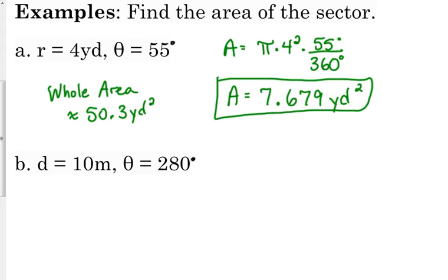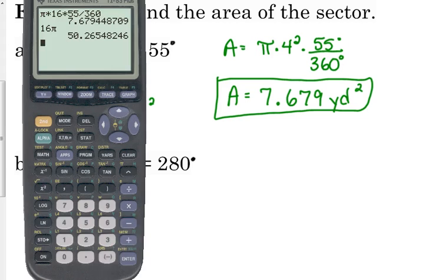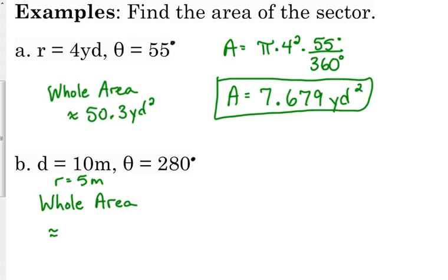In example B, we've got the diameter is 10 meters and theta is 280 degrees. What do we need to do to find the whole area? Is it 10 squared pi? And 100 pi? No. It would be half of that, because that's the diameter. So the radius is 5. So it would be 5 squared pi, which is 25 pi, which is approximately 78.5.